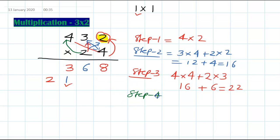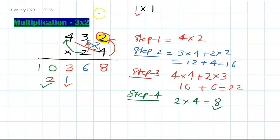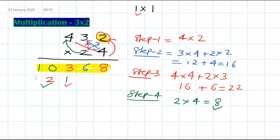Step 4: 2 times 4 is 8, plus carry 2 gives 10. So the final answer is 10368. You can verify with a calculator — 432 times 24 is indeed 10368.